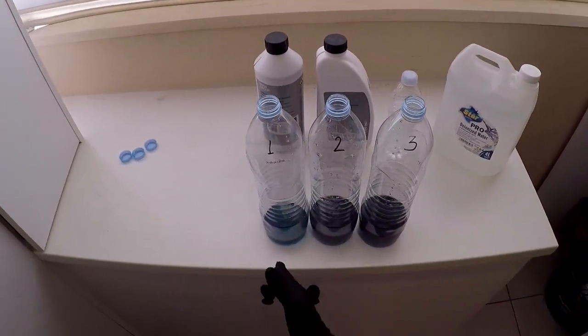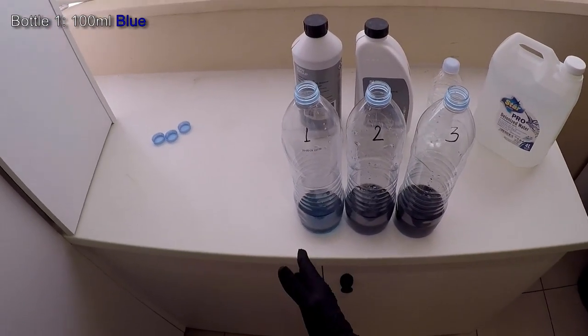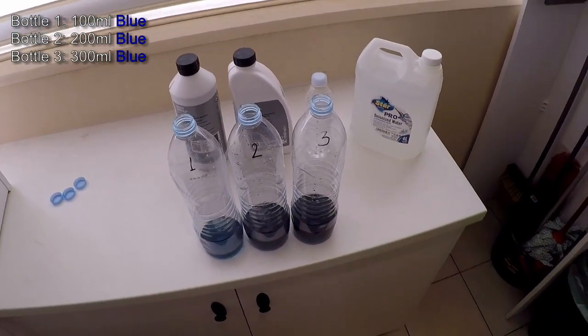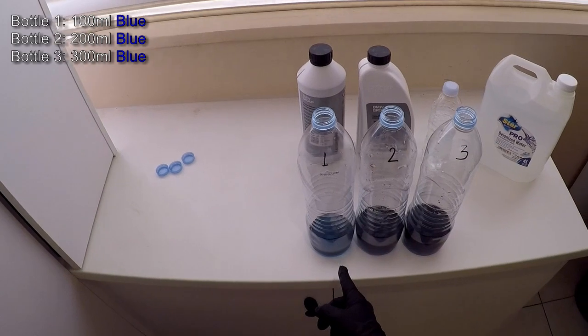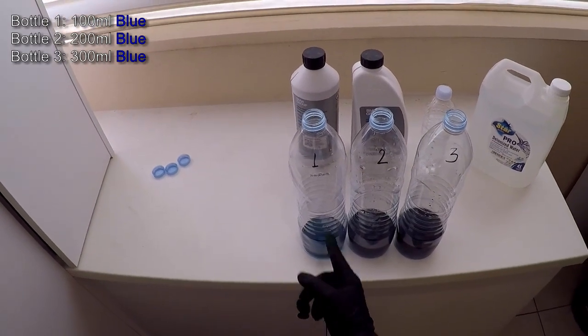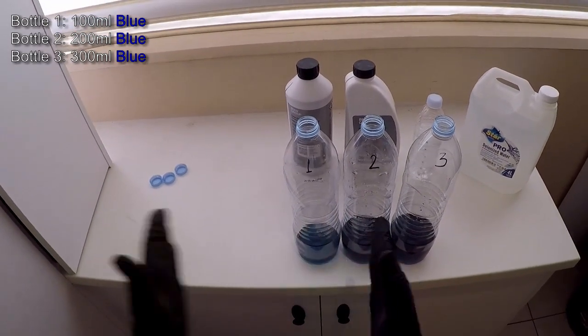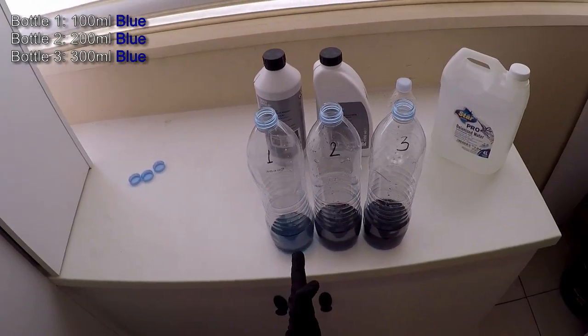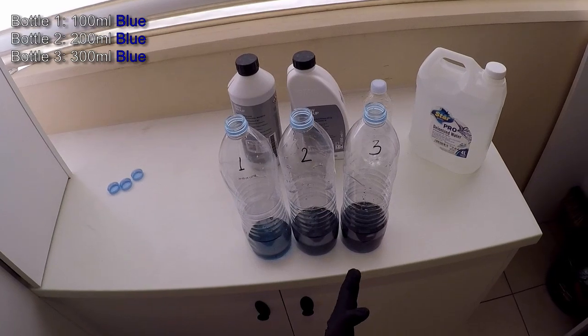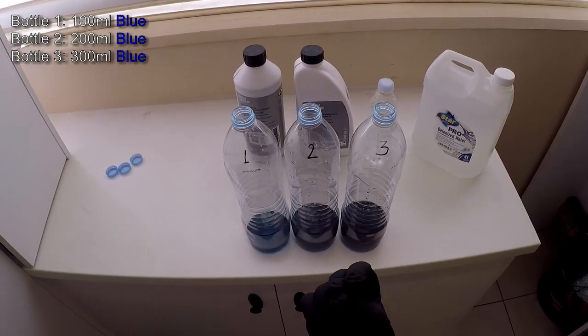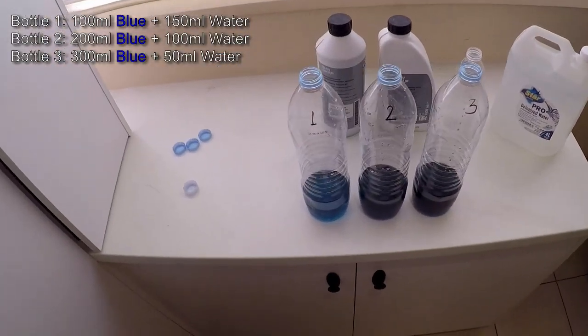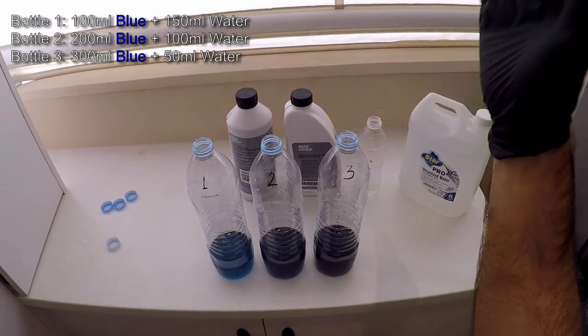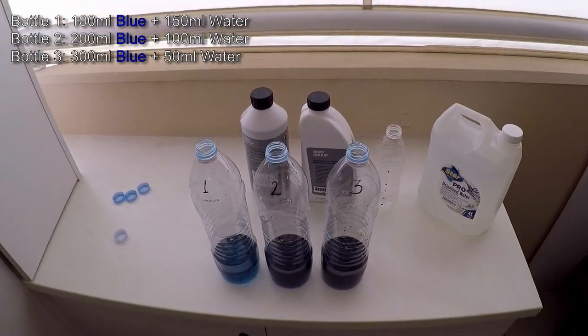So here we go guys, bottle one has 100 ml of blue coolant, bottle two has 200 ml of blue coolant, and bottle three has 300 ml of blue coolant. We're going to add 300 ml of green coolant to bottle one, but that will be 50% water and 50% green antifreeze. So we are going to first add the water to each of these bottles. Okay, that's done.